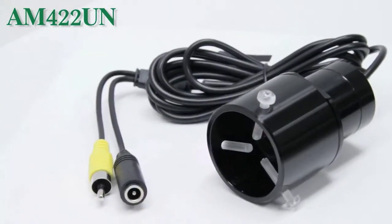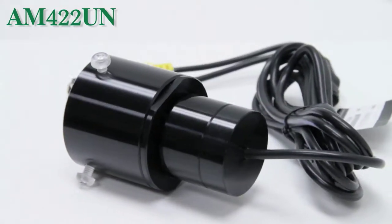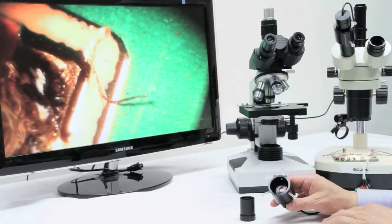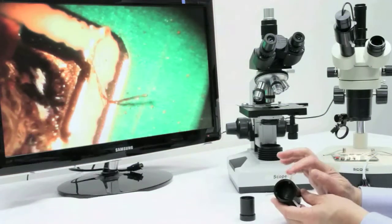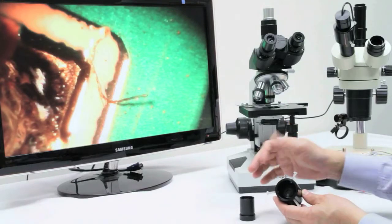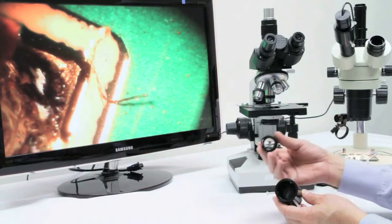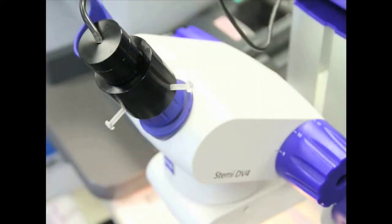This is a brief video about the AM422UN DynoEye eyepiece camera. The AM422UN is an analog TV model that has a 36mm diameter that can fit up to 34mm eyepiece. This model is specifically designed for those with microscopes that do not have the standard size eyepiece of 23mm or 30mm.